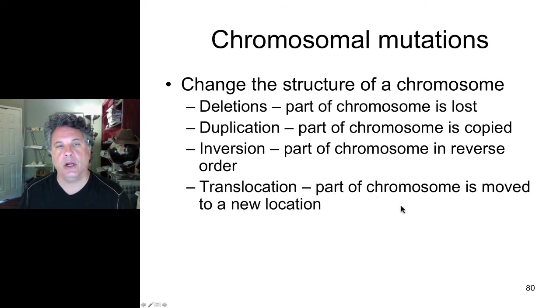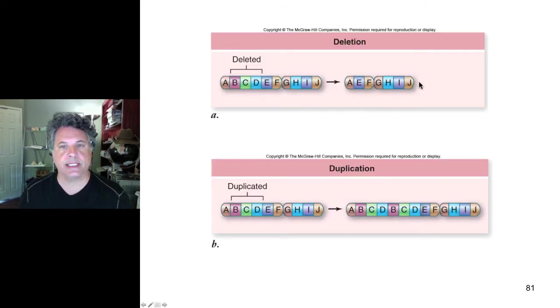Translocations are when part of one chromosome is translocated to another chromosome, usually of another homologous set of chromosomes. Here's an example of a deletion where we're designating genomic regions by letters on a chromosome. Here's the centromere shown. In this case we've deleted B, C and D regions of the chromosome. They are missing in the resulting deletion chromosome.